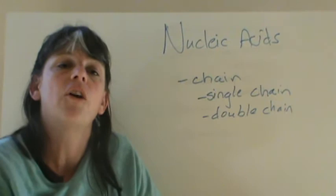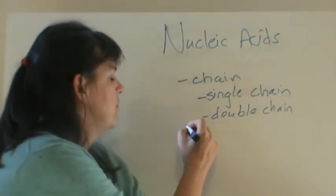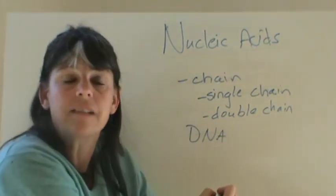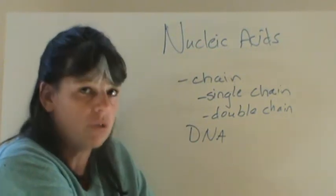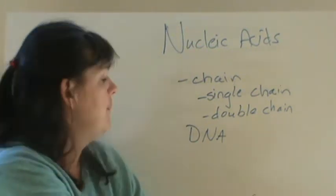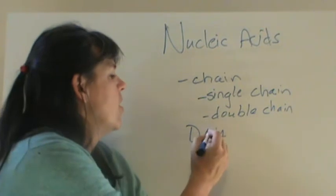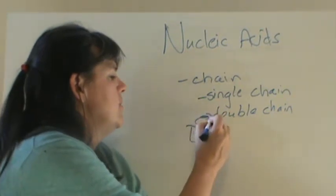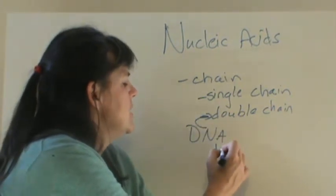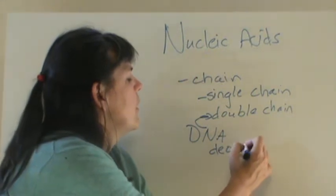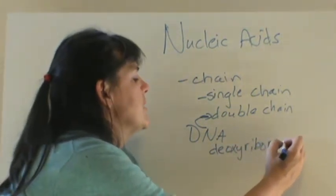Now, you guys have all heard of DNA, which is one of our two nucleic acids that we work with. So there's two nucleic acids. One is DNA, one is RNA. DNA is our double chain, and it stands for deoxyribonucleic acid.